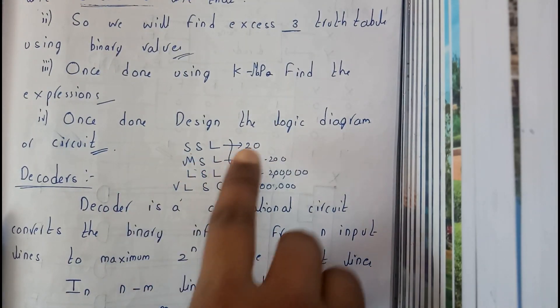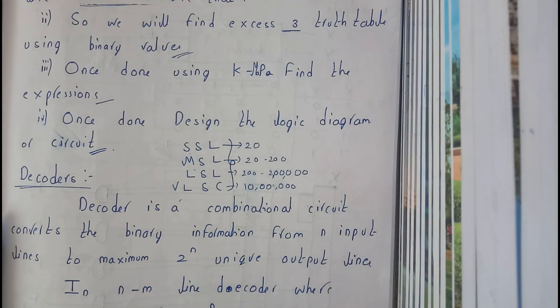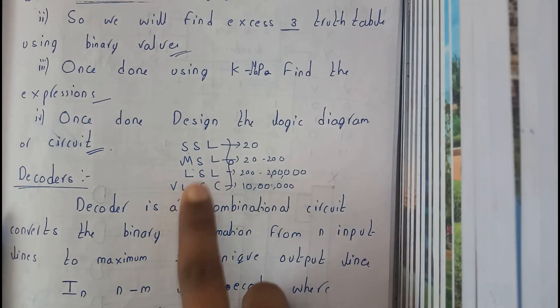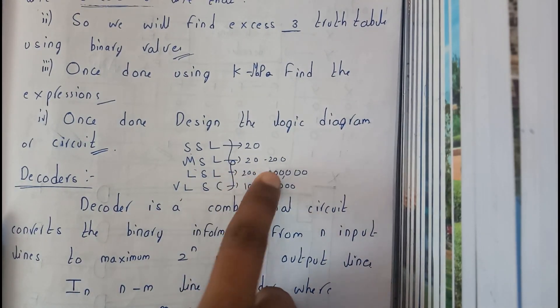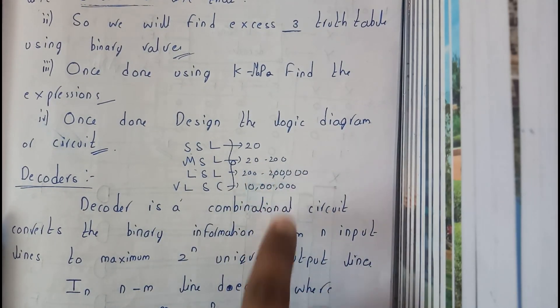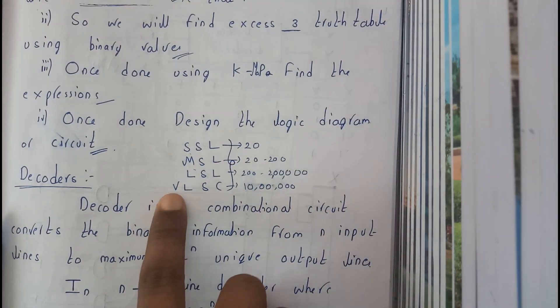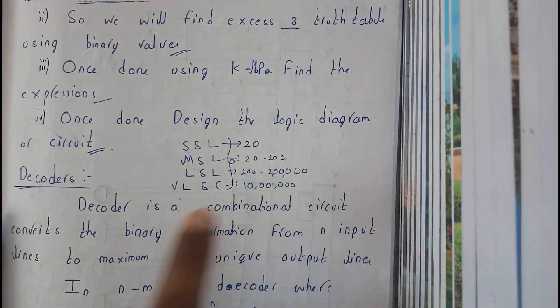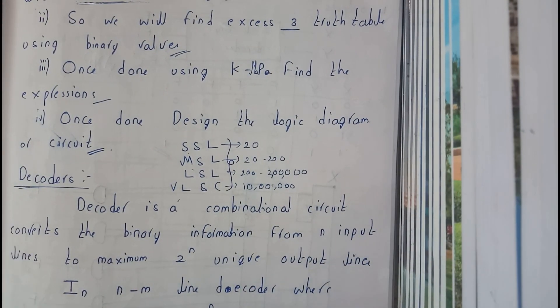Small scale integration will be having at max 20 logic gates in a particular chip. Medium scale will be having 20 to 200. Large scale will be having 200 to 2 lakhs, and very large scale will be having at max 10 lakhs.